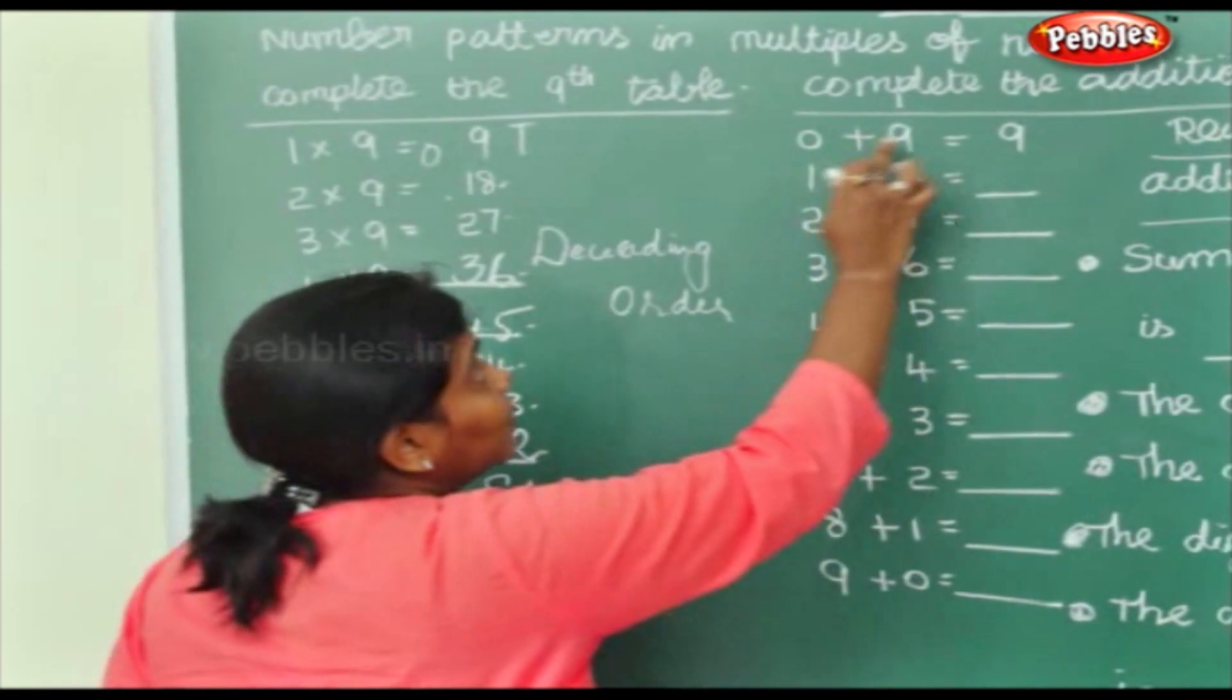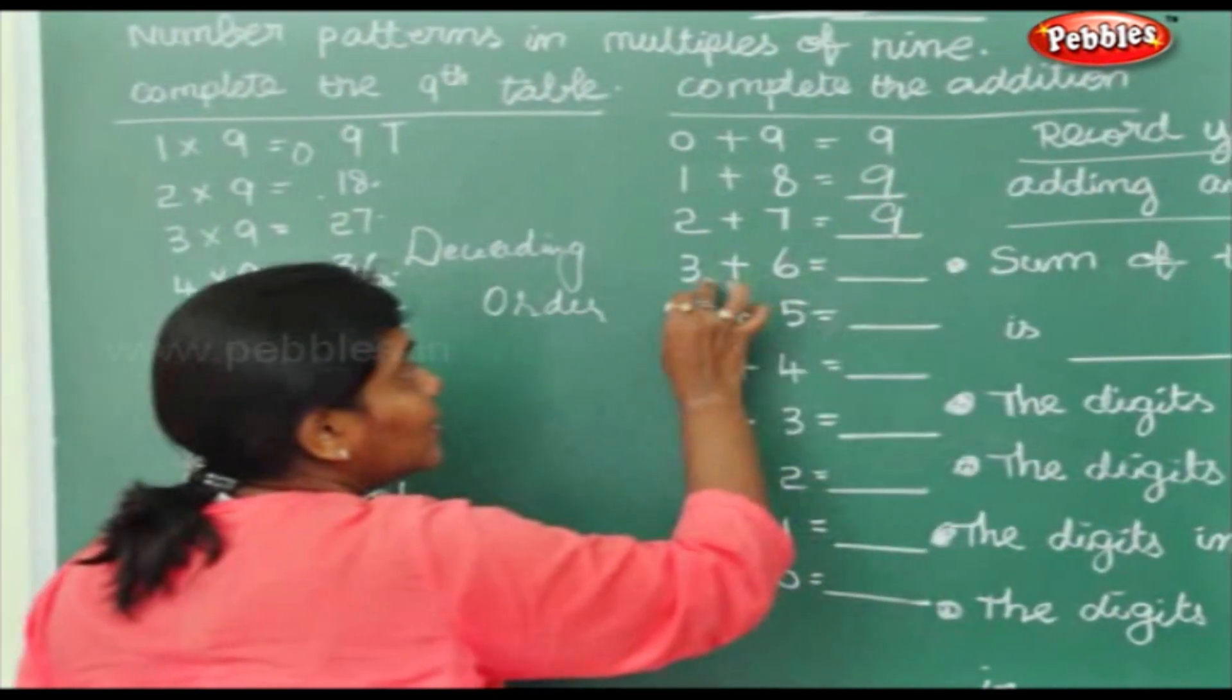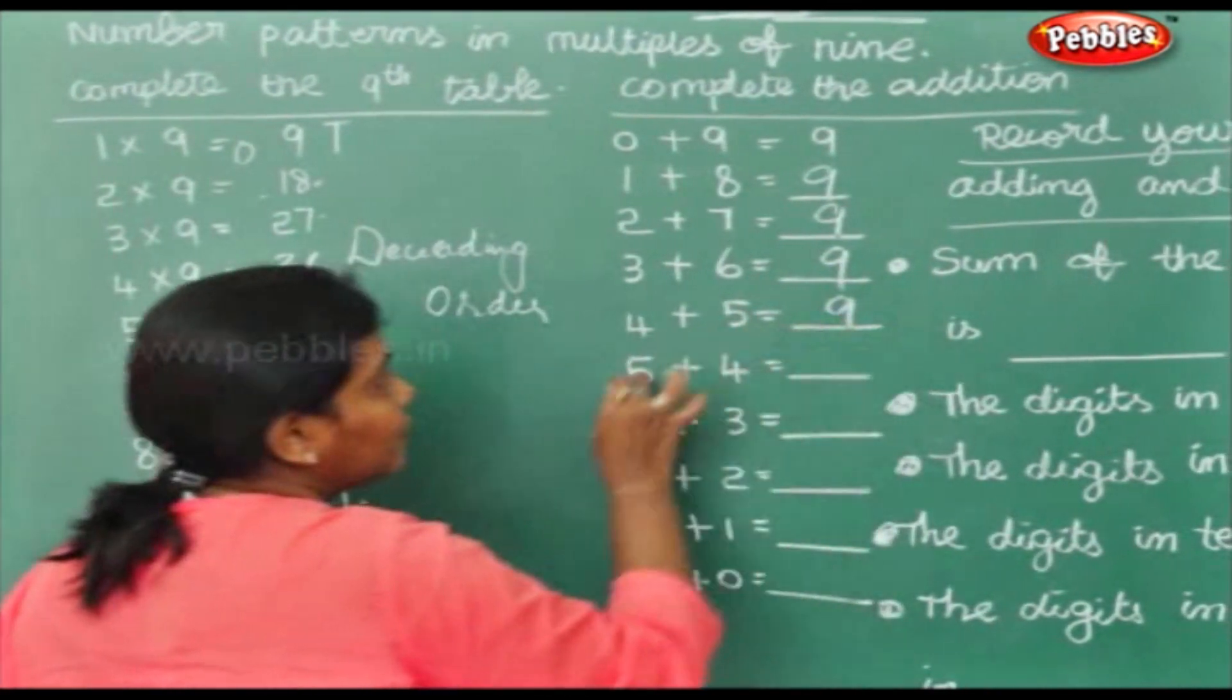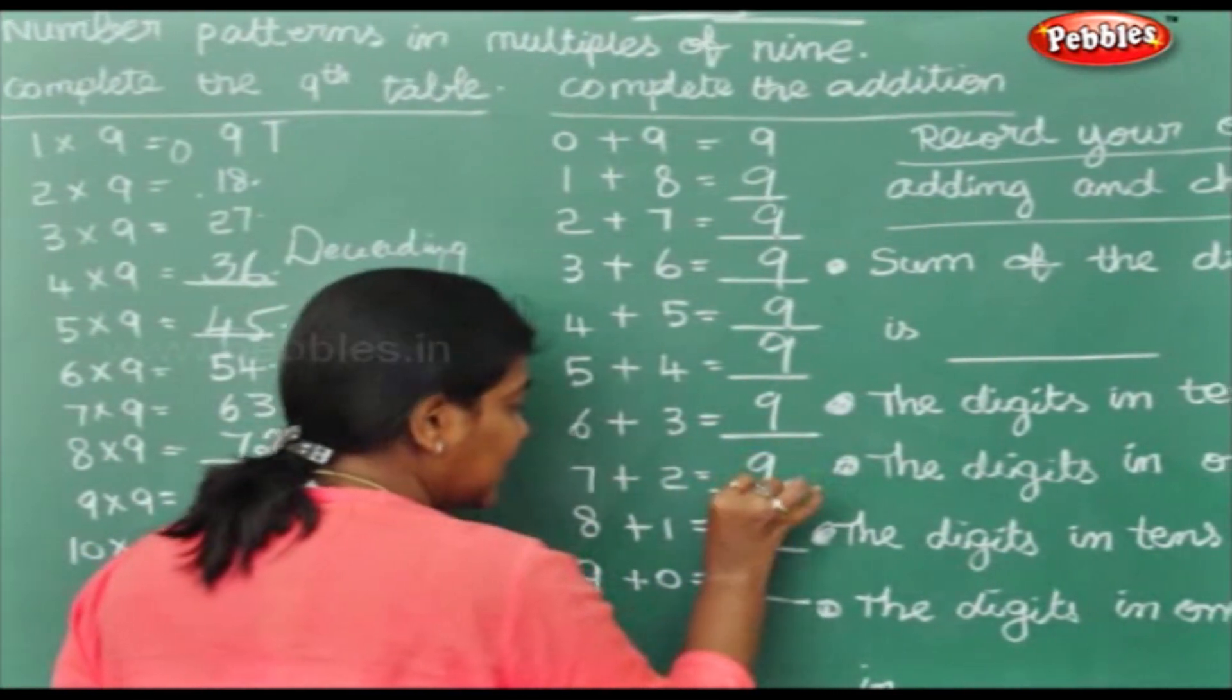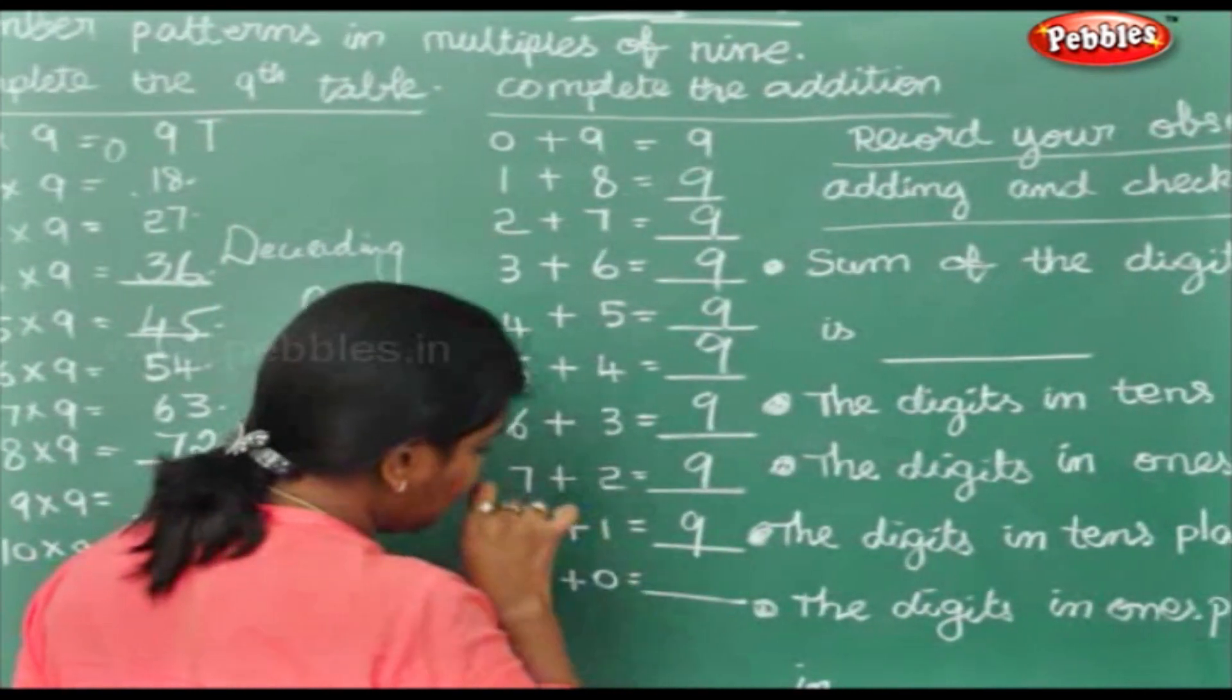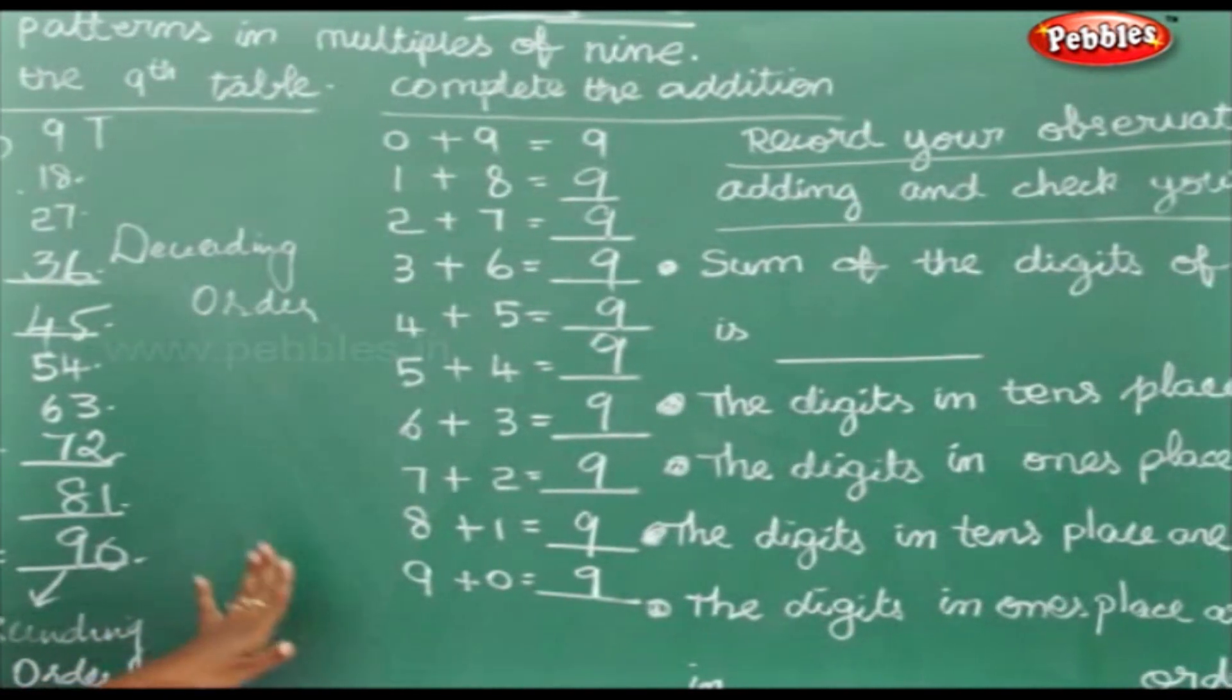Complete the addition. 0 plus 9 is 9, 1 plus 8 is 9, 2 plus 7 is 9, 3 plus 6 is 9, 4 plus 5 again 9, 5 plus 4 is 9, 6 plus 3 is 9, 7 plus 2 will also be 9, 8 plus 1 will also be 9, 9 plus 0 is 9 again.